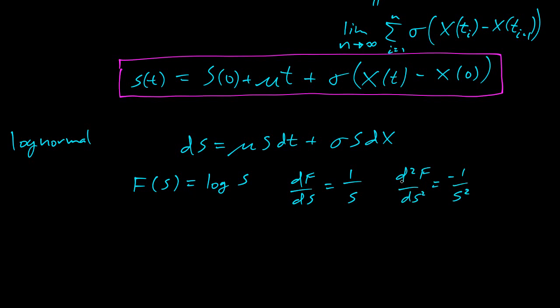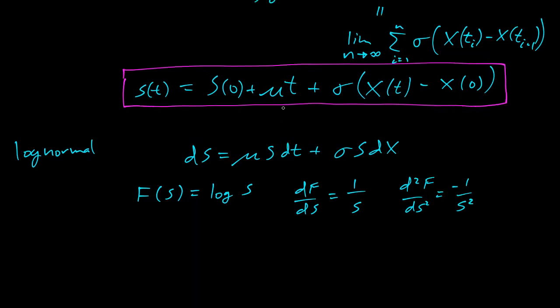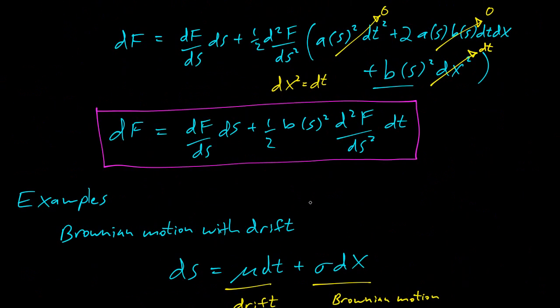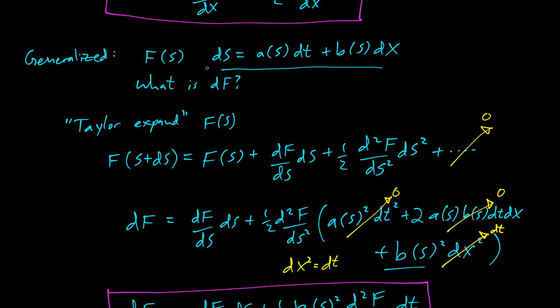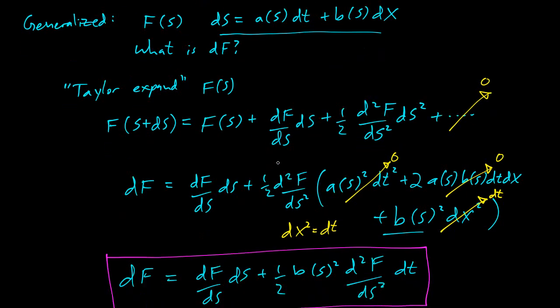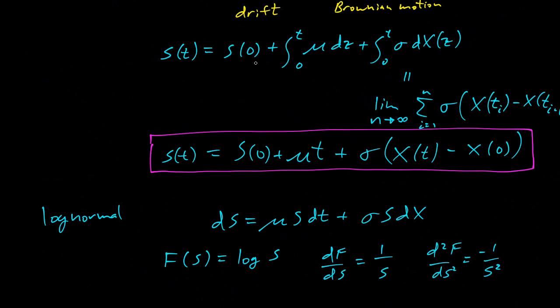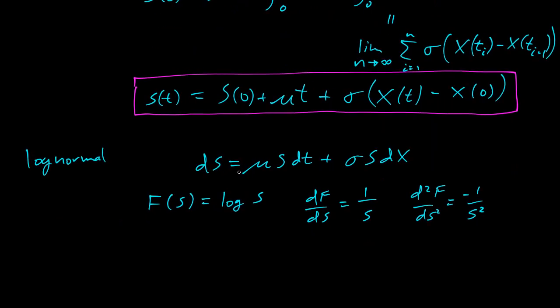Now we can use these facts, and this is exactly the generalized Ito's lemma. You have a stochastic differential equation for ds. You have a function of s, and you're asking what is df. That's exactly what we have. We have a differential equation for ds here, and we have a function of s and some facts about it. Now we can use these facts and the generalized Ito's lemma to get the answer.